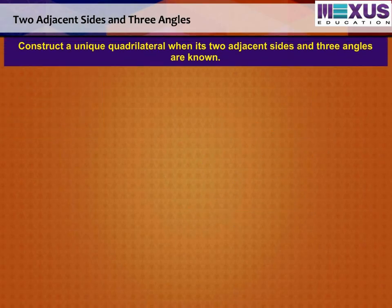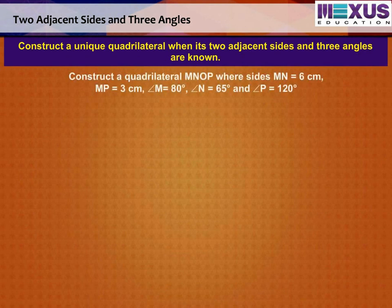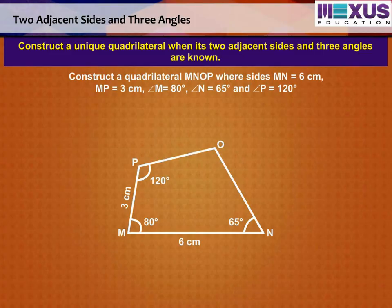Let us now learn how to construct a unique quadrilateral when its two adjacent sides and three angles are known. Given to construct a quadrilateral MNOP where sides MN is equal to 6 cm, MP is equal to 3 cm, angle M is equal to 80 degrees, angle N is equal to 65 degrees, and angle P is equal to 120 degrees.